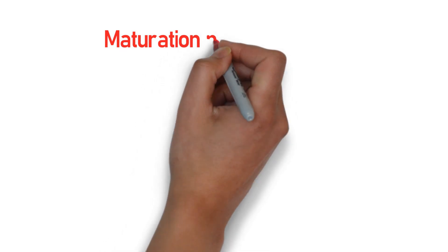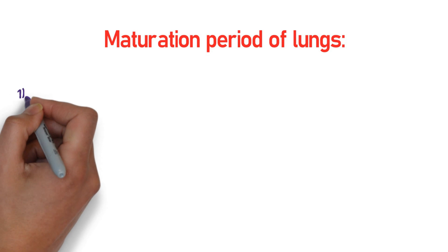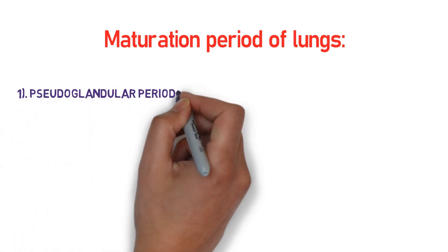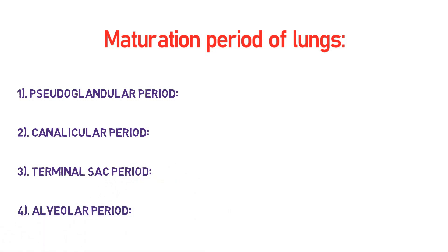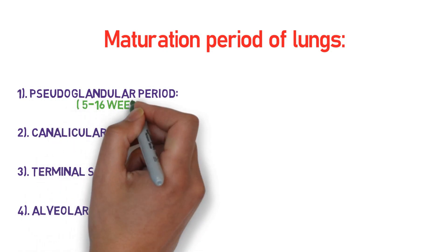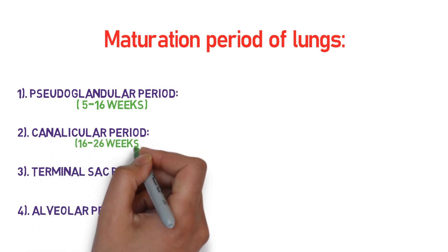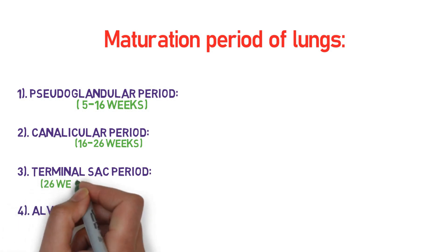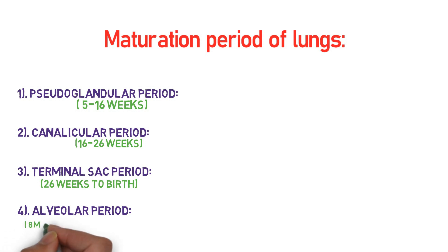The maturation of the lung is classified into four periods: the pseudoglandular period, the canalicular period, the terminal sac period, and the alveolar period. The pseudoglandular period spans 5 to 16 weeks; the canalicular period from 16 to 26 weeks; the terminal sac period from the 26th week to birth; and the alveolar period from the 8th month through childhood.